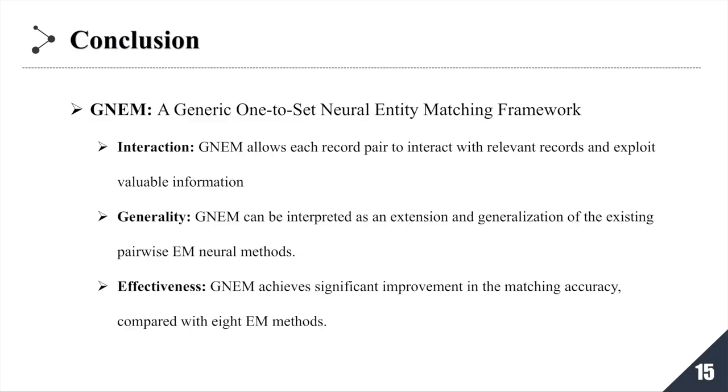At last, I briefly summarize our work. In this paper, we developed a generic one-to-set neural framework named GNEM for entity matching. GNEM allows each record pair to interact with relevant records and exploit valuable information from other pairs during the decision of its matching label, which is beneficial to the overall matching performance. And we show that GNEM can be interpreted as an extension or generalization of existing pairwise entity matching neural methods. It enhances the pairwise matching process by devising a record pair graph to facilitate the interaction among pairs for information propagation. We evaluate our framework on public entity matching datasets. The results show that GNEM achieves significant improvement in the matching accuracy compared with existing pairwise models.